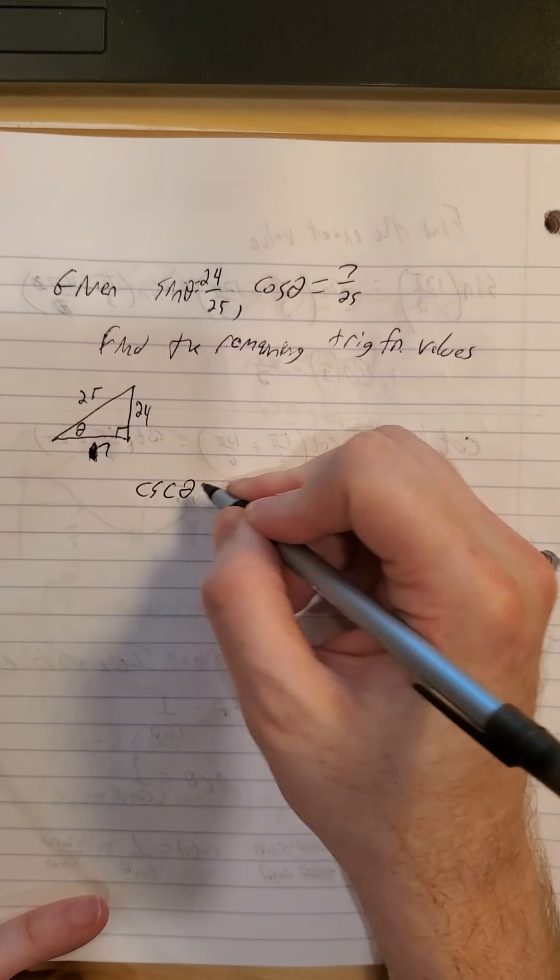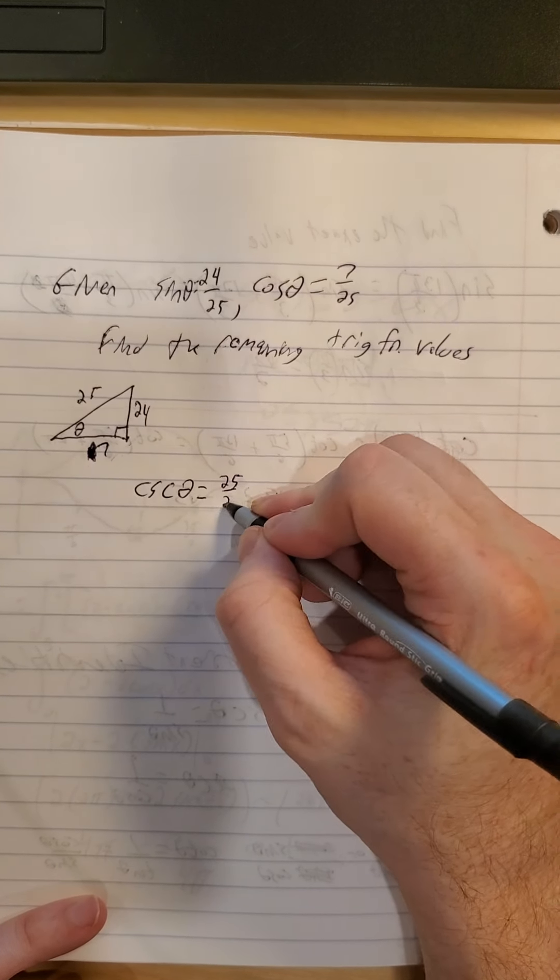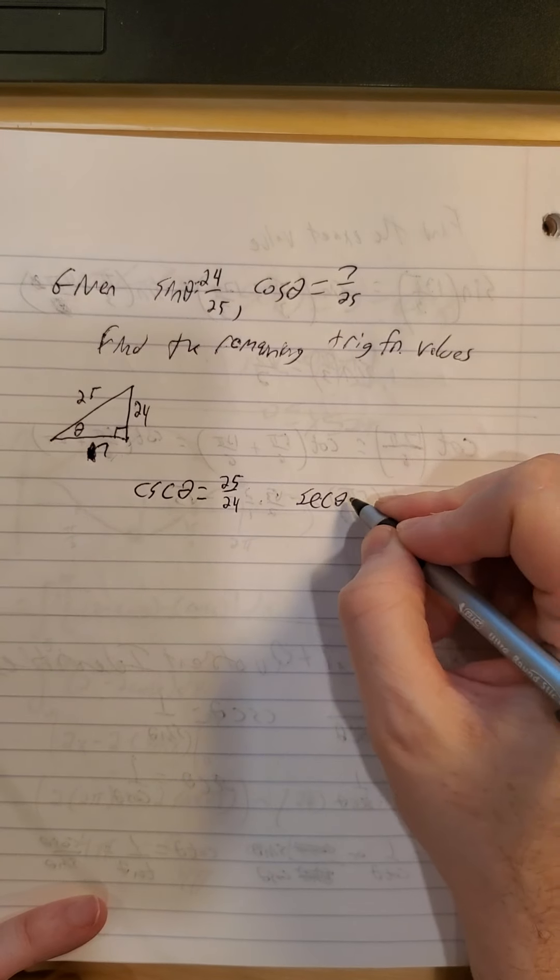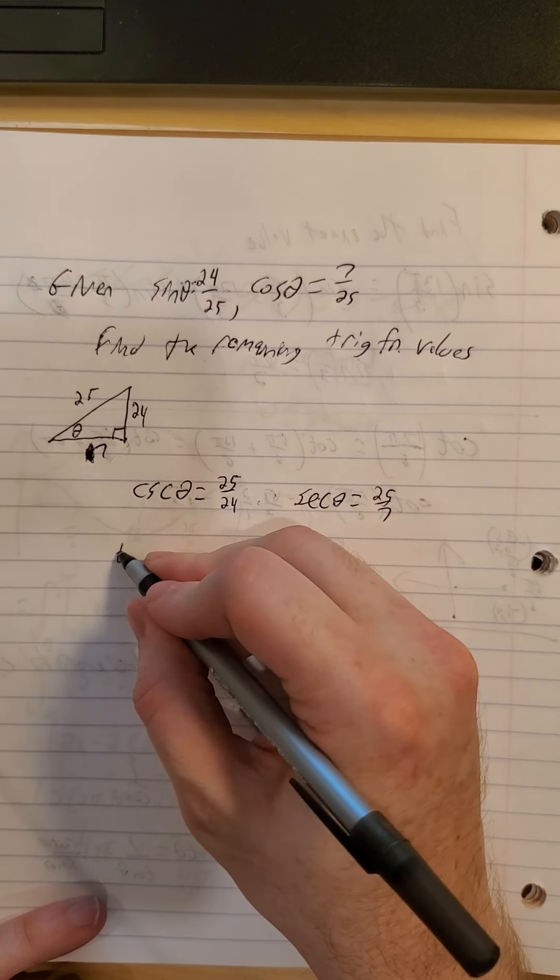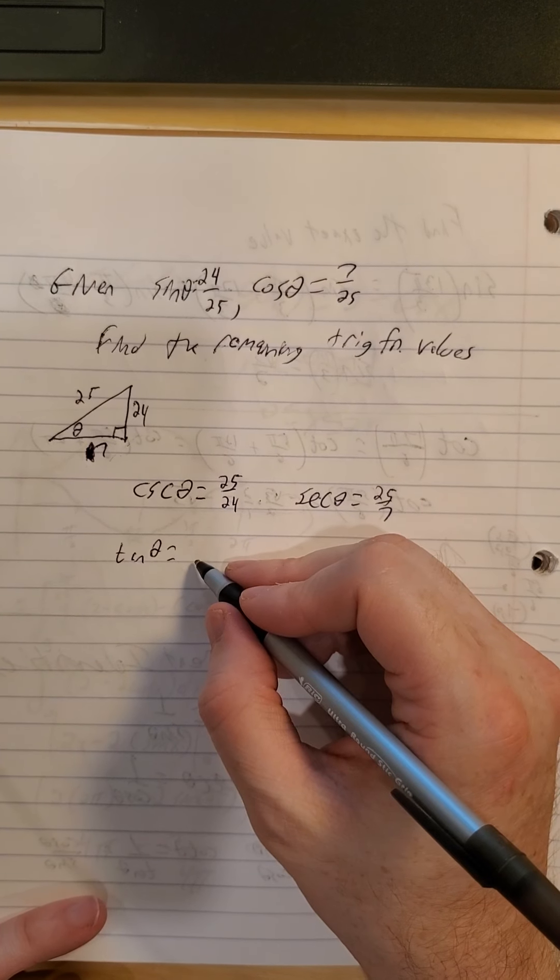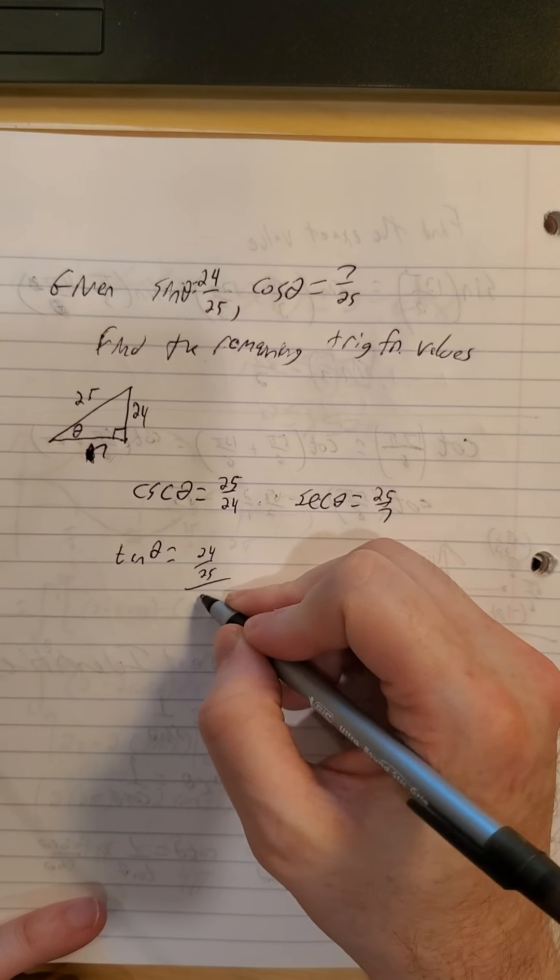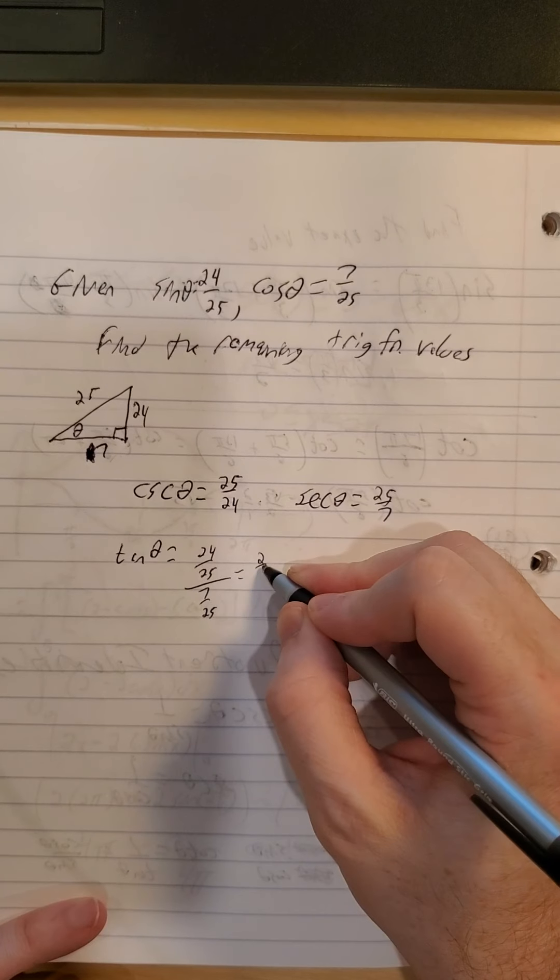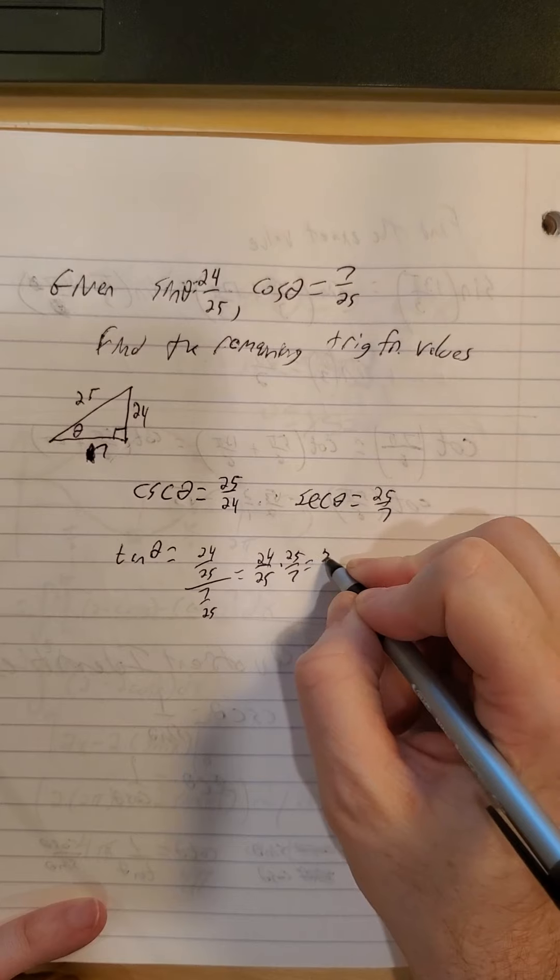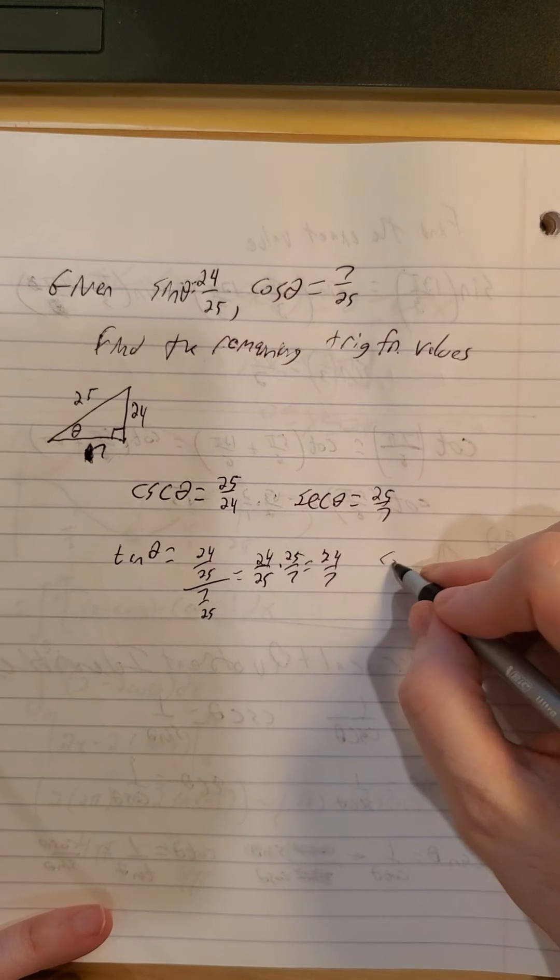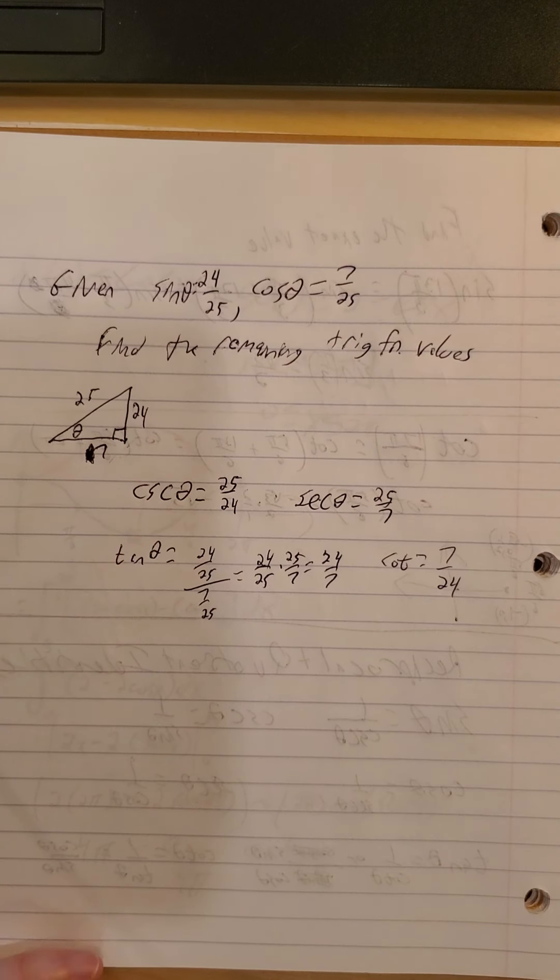So the cosecant of theta is just the reciprocal of sine. So that is 25 twenty-fourths. Secant theta is reciprocal of cosine, so 25 sevenths. Tangent theta, sine over cosine. So 24 twenty-fifths over 7 twenty-fifths. So 24 twenty-fifths times 25 sevenths, or just 24 sevenths. Which then would make our cotangent 7 twenty-fourths without any extra fanfare.